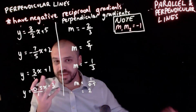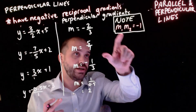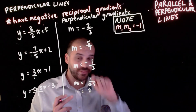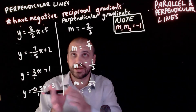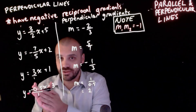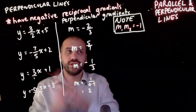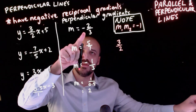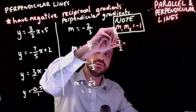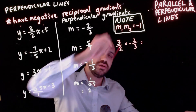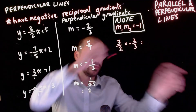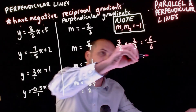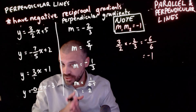Another way to say the same thing: M1 times M2 equals negative 1. That's just another way of saying the perpendicular line will be the reciprocal of the other line. We can see why by looking at an example: if M1 is 3/2 and M2 is negative 2/3, then M1 times M2 equals 3 times negative 2 over 2 times 3, which is negative 6 over 6, which equals negative 1. This is true for all perpendicular lines.